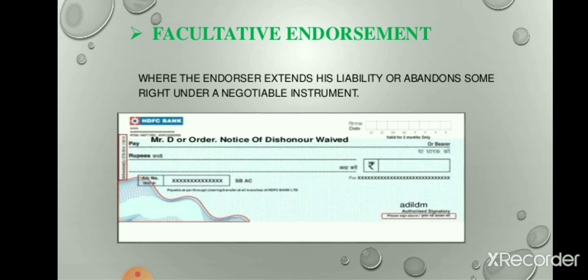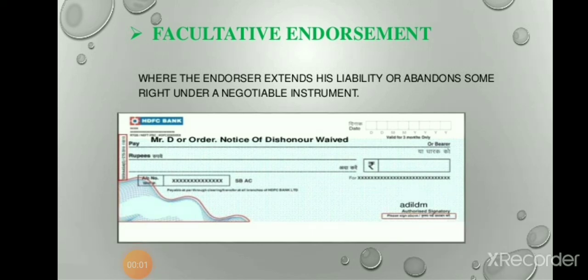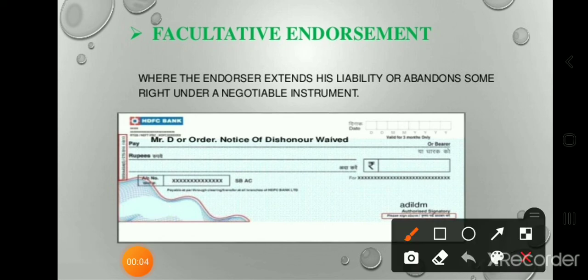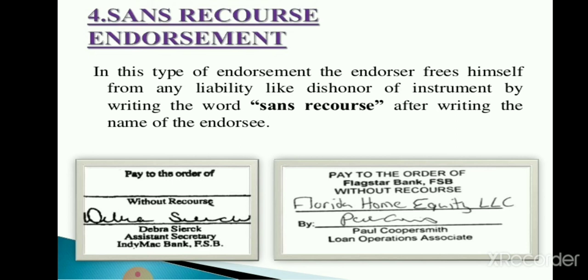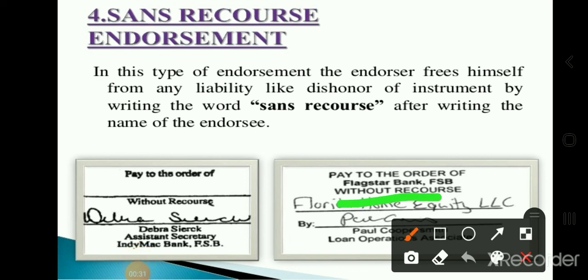The first part is facultative endorsement, where the endorser extends his liability or waives some right under a negotiable instrument. As you can see in the specimen on screen, it is clearly written that 'notice of dishonor waived.' The second part is sans recourse endorsement, in which the endorser frees himself from any liability — like dishonor of the instrument — by writing the words 'sans recourse' or 'without recourse.' As you can see in the specimen, by mentioning the words 'without recourse,' one can avoid subsequent liability.